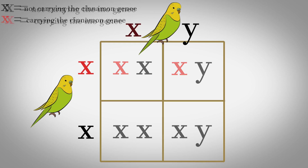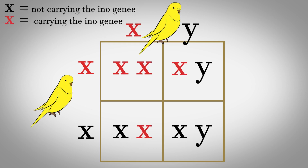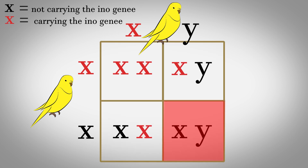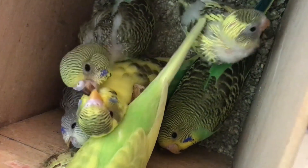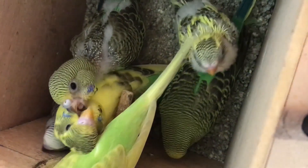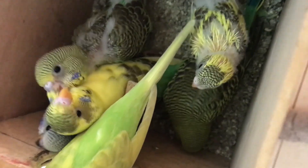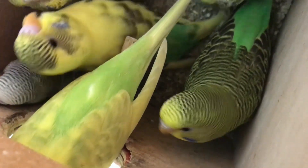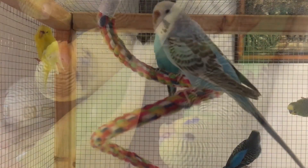If you need to try any other possibilities, you can watch any of the ino or opaline videos, since they are all X-linked mutations and whatever the Punnett square says for any of those mutations applies exactly the same to the cinnamon gene. Or you can watch the Punnett square video and learn how to use it yourself, then try any combination you want.